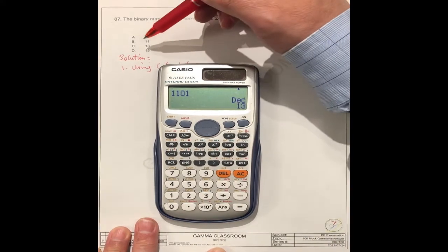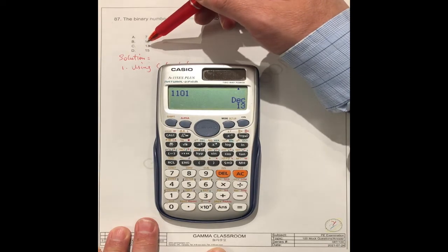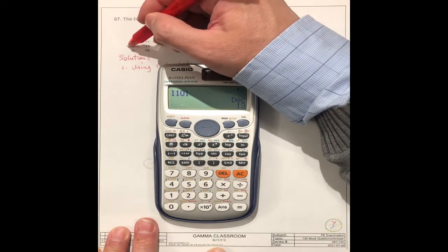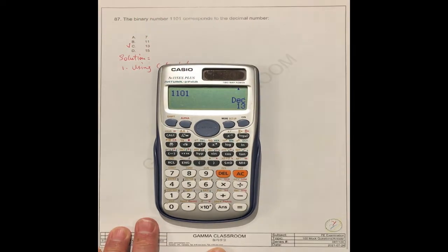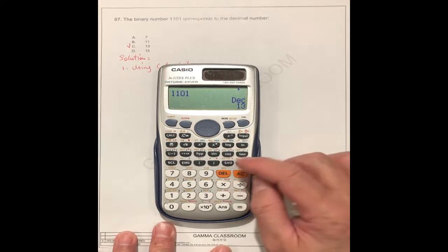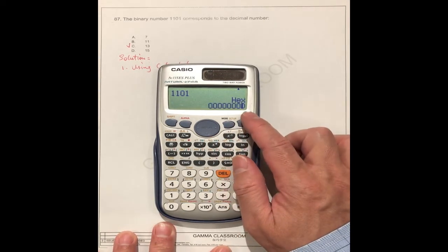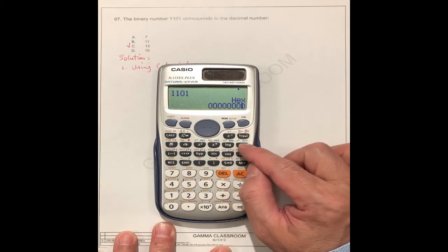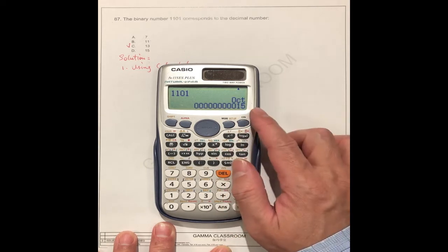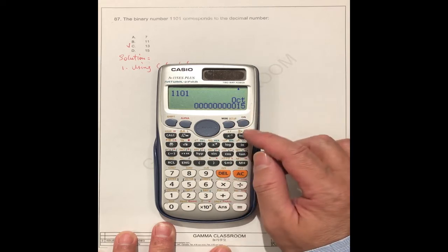You see here, number C is 13. You see, right? It's so easy. If you want to choose the hexadecimal, it's D. If you want to transfer to octal, it's 15. So easy.